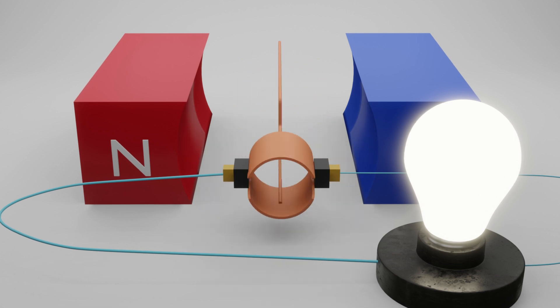As the armature rotates, it cuts through the magnetic field lines, inducing a voltage across its terminals. This voltage, however, is not constant and needs to be regulated to provide a steady output.